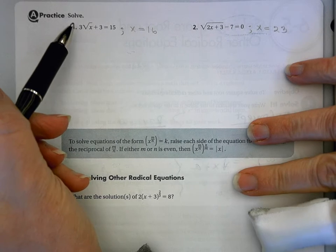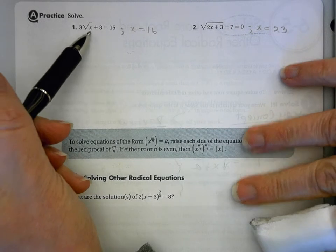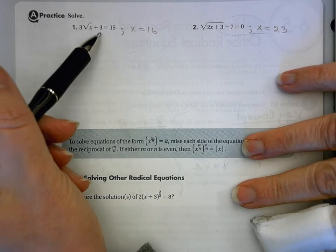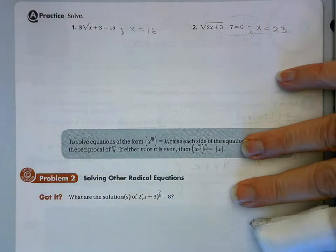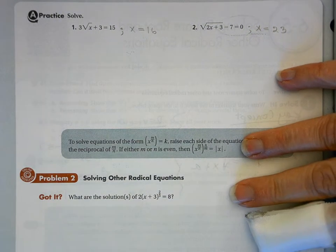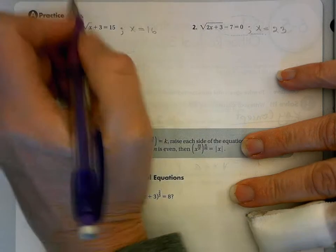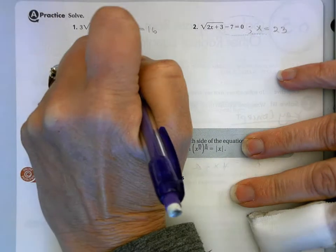They want us to solve, so in order to solve for x, we need to isolate the radical. That means both of the 3's need to move to the other side. We're going to do inverse operations. The first thing I want to do is get rid of the plus 3, so I need to subtract 3 from both sides.